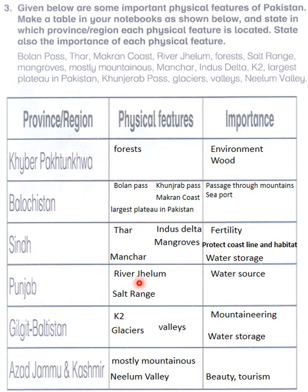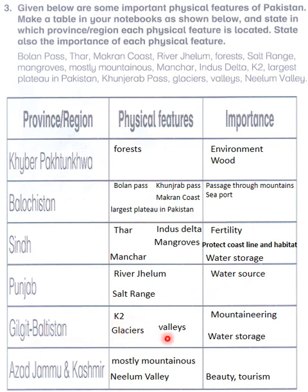Then Punjab: Punjab has River Jhelum and the Salt Range. River Jhelum, as you know, is a very big water source and it makes a large area fertile. Then Gilgit-Baltistan has K2 Mountain, glaciers, and valleys.